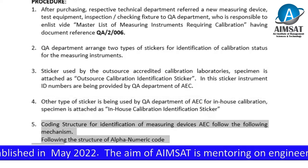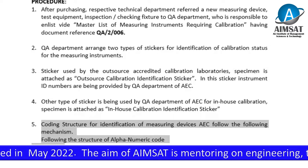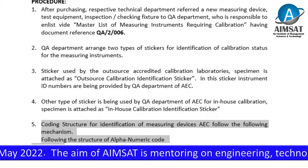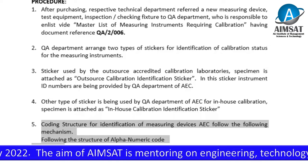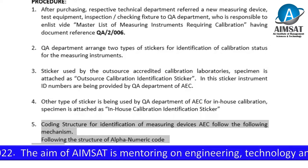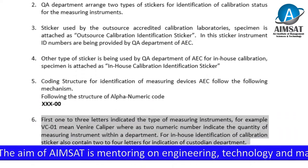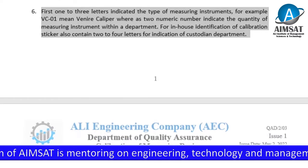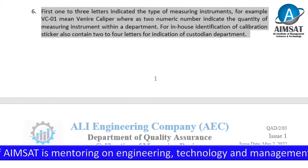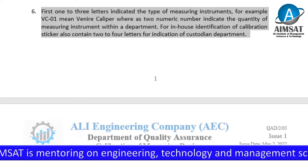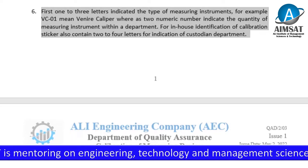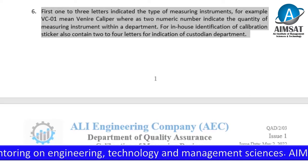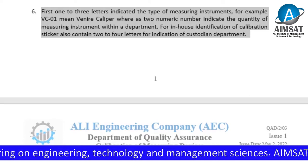The coding structure for identification of measuring devices at AEC follows the mechanism of a four-character numeric code: XXX-000. The first one to three letters indicate the type of measuring instrument — for example, VC-01 means one vernier caliper — while the two numeric numbers indicate the quantity of measuring instruments within the department. The in-house calibration sticker also contains two to four letters indicating the custodian department.